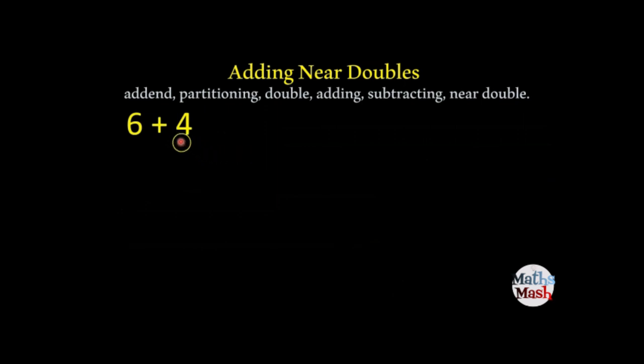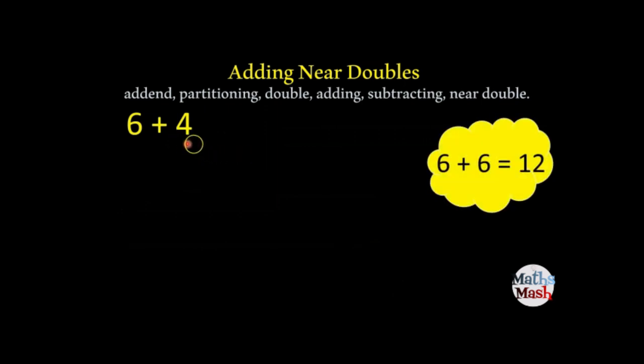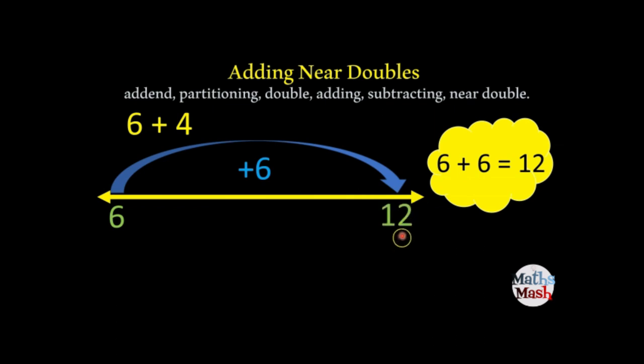Alright, next one, 6 plus 4. Again, we start with what we know, 6 plus 6. And we're going to build our number line using this information to start. So we have our number line and we have our first 6. We make our jump of 6 and that gets us to 12. But we have to take away 2 because we have 6 plus 4, not 6 plus 6.